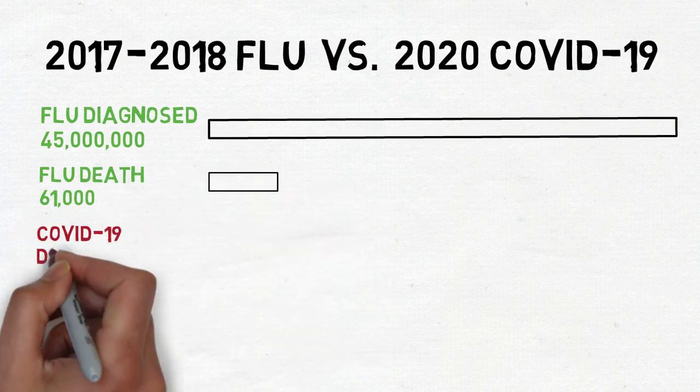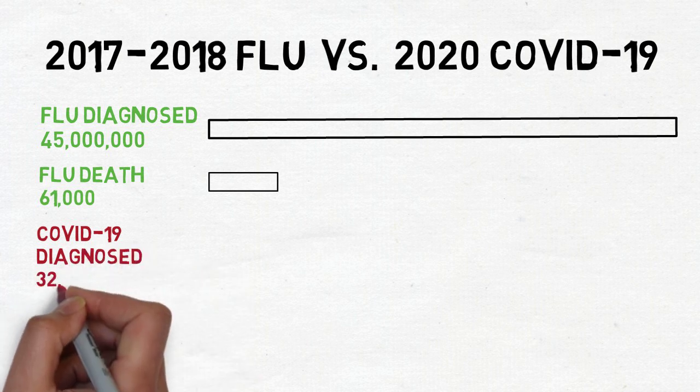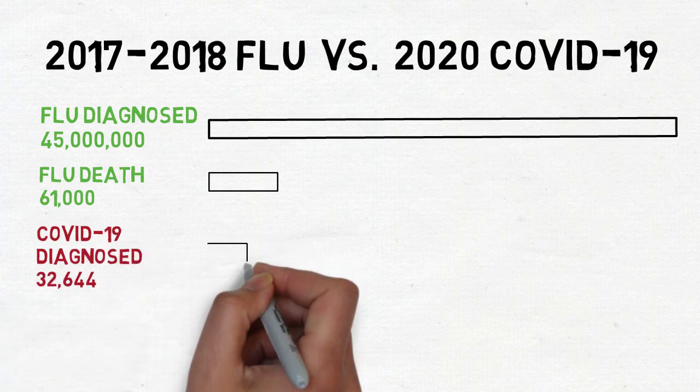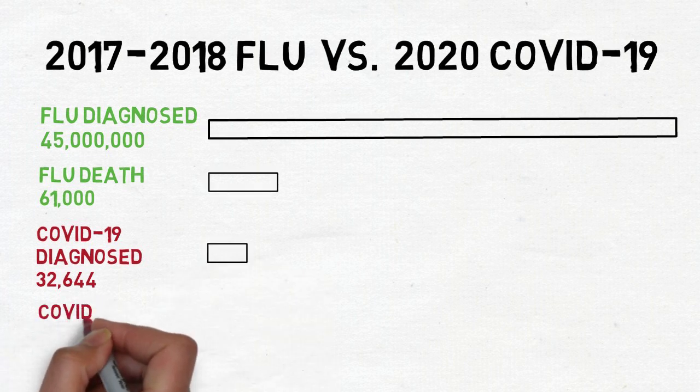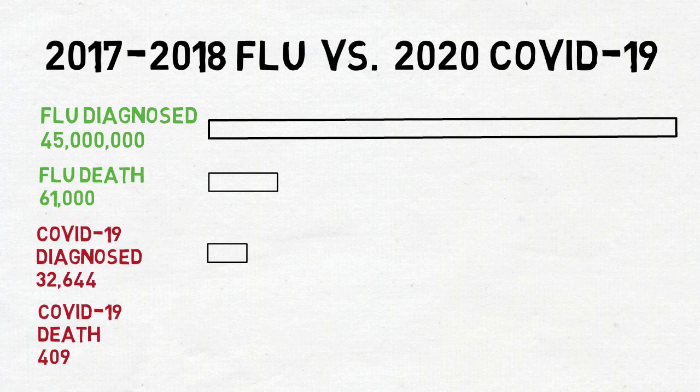As I'm making this video, there are 32,644 confirmed COVID-19 cases with 409 deaths. That seems like just a fraction of numbers of cases compared to an ordinary flu season, right?